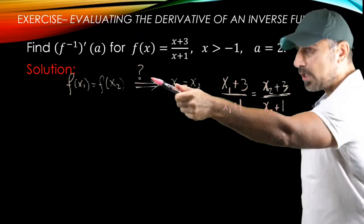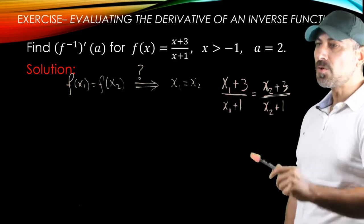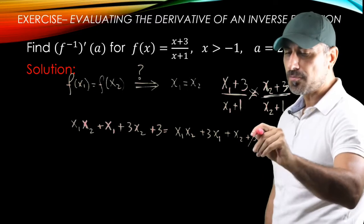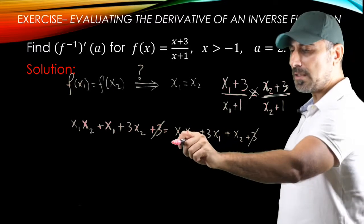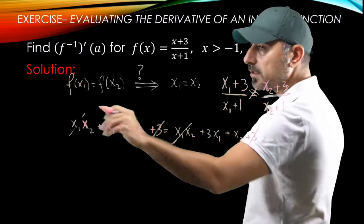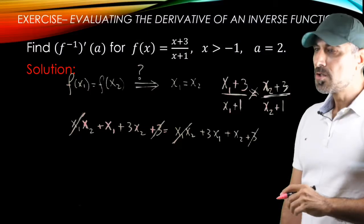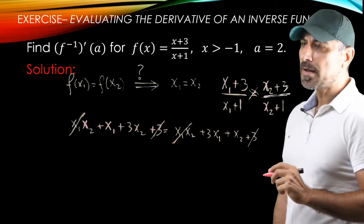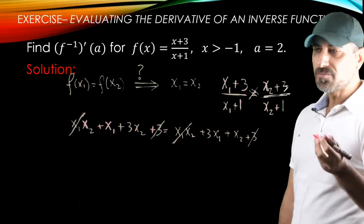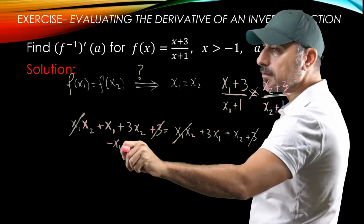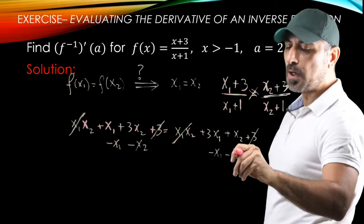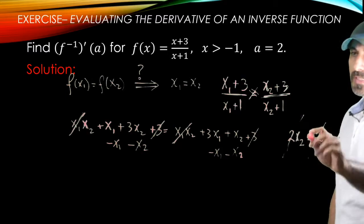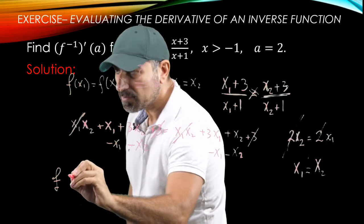We write down f(x₁) = f(x₂) and solve. Using cross multiplication, the x₁·x₂ terms cancel from both sides, and the 3s cancel as well. We're left with x₁ + 3x₂ = 3x₁ + x₂. Subtracting x₁ and x₂ from both sides yields x₁ = x₂. So whenever f(x₁) = f(x₂), we get x₁ = x₂.